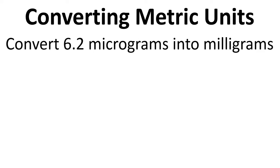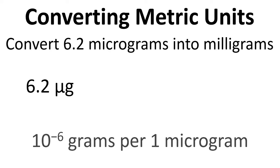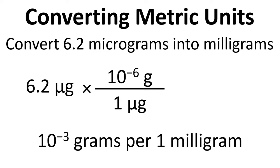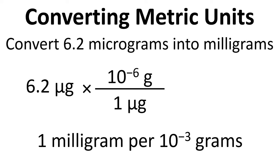Another example, to convert 6.2 micrograms into milligrams. So we start with our 6.2 micrograms. Now we know that there's 10 to the minus 6 grams for every microgram. So we write down 10 to the minus 6 grams divided by 1 microgram. We also know that there's 10 to the minus 3 grams for every 1 milligram. We need to write this the other way round though. So it's 1 milligram for every 10 to the minus 3 grams.